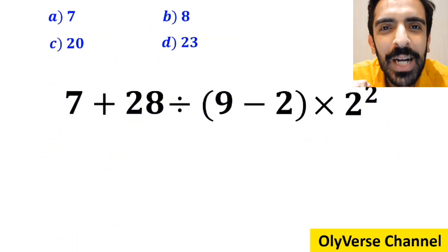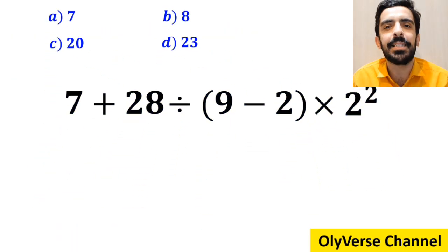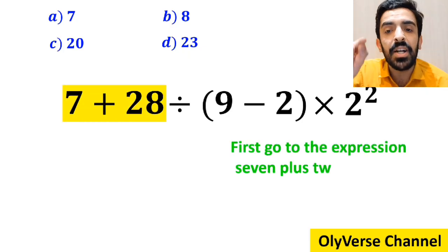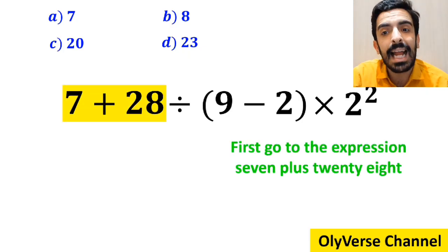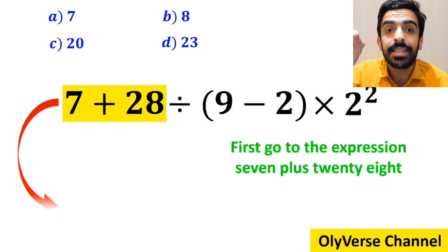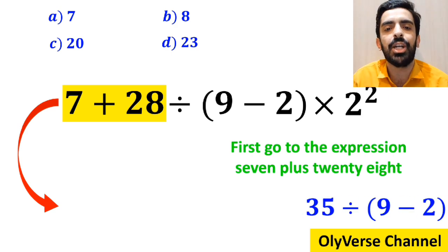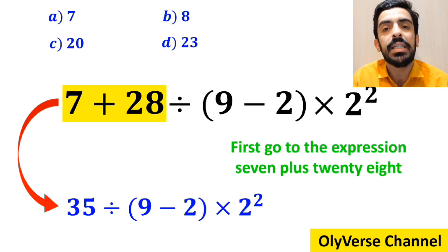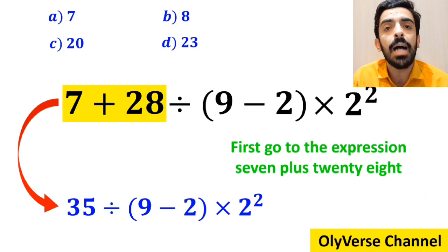Let's dive in and break it down step by step together. Many people, to solve this question, first go to the expression 7 plus 28, and instead of this expression, they write 35 divided by 9 minus 2 inside the parenthesis, then times 2 to the power of 2.